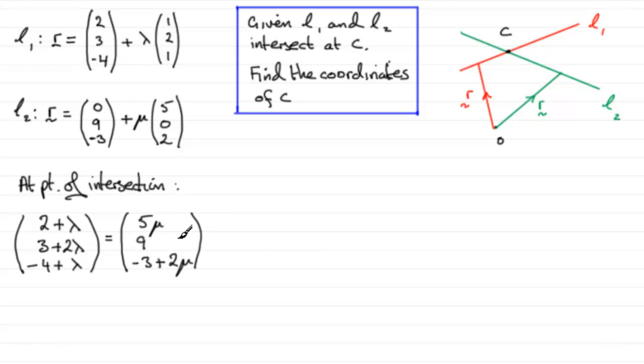Now, this is very simple because, unlike many other questions where you've got to see if lines intersect, we're actually told that the lines intersect at this point C. So, all I need to do is just find the easiest equation out of these three by comparing I, J, and K components.